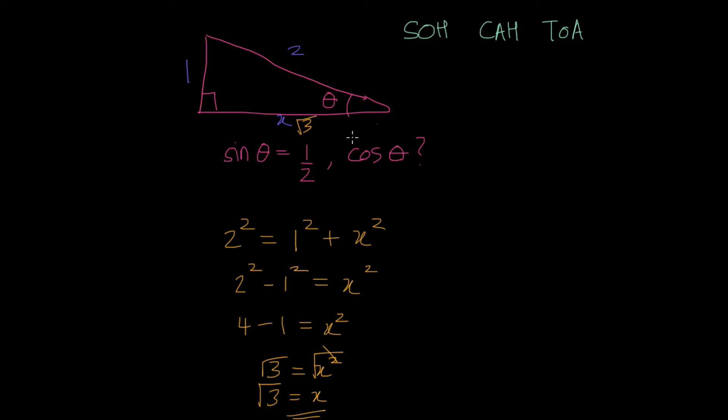Right now that we have that, we can go ahead and solve for cosine. So the cosine is going to be adjacent over hypotenuse. The adjacent side is root 3, root 3 over hypotenuse, which is 2. And that's going to be my answer. Thank you.